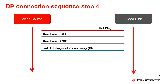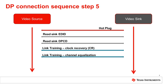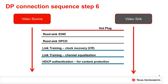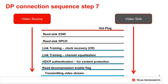Link training establishes the physical link parameters used for transmission of video and audio over the DP main link. The link training consists of two sequences: the first is clock recovery, and once complete, the source starts the channel equalization sequence. Once link training is complete, and if the video and audio content is flagged for content protection, the High Bandwidth Digital Content Protection, or HDCP, authentication protocol is used. Compressed and encrypted video transmission is then initiated through the main link.